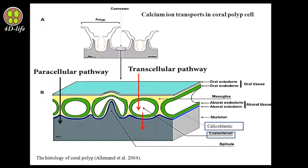In the paracellular pathway, the transport of ions is done by diffusion, and it is a passive mechanism. In the transcellular pathway, ions need to enter, cross, and then exit from the cell. Their transport is therefore active and is carried out using the cell's energy.